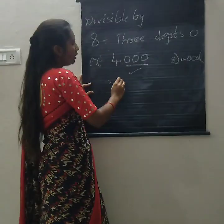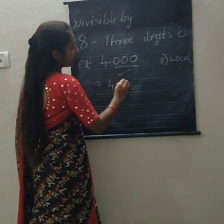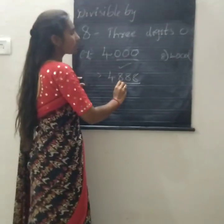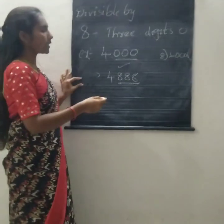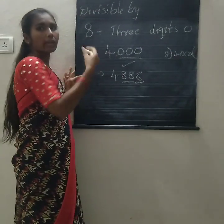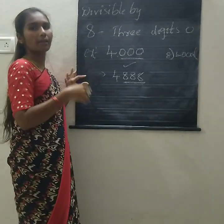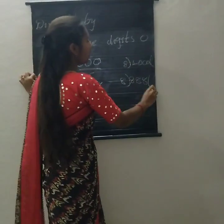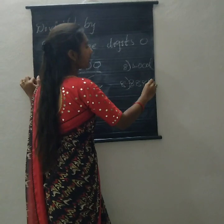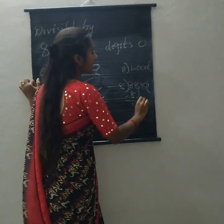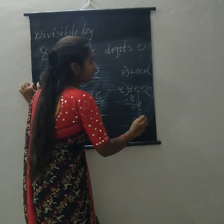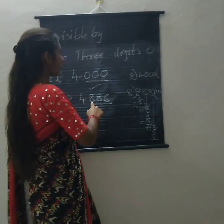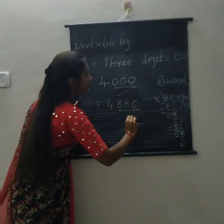Next example: 4,888. The last 3 digits are 888. We check if 888 is divisible by 8 by doing division. 8 goes into 8 once — 8 minus 8 is 0. Bring down the next 8: 8 once is 8, minus 8 is 0. Bring down the last 8: 8 once is 8, minus 8 is 0. So 888 is divisible by 8, and therefore 4,888 is divisible by 8.